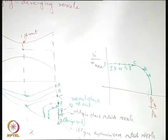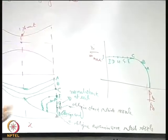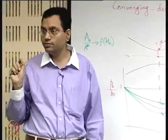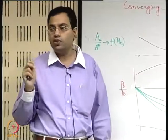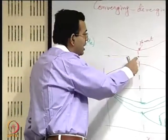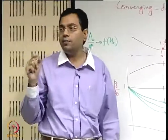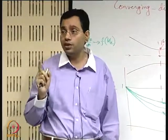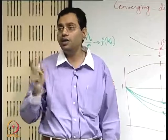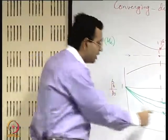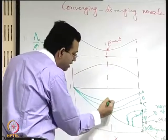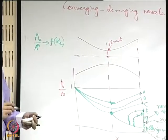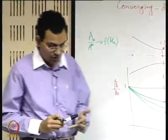If you want supersonic flow in the diverging section, the flow must pass through the sonic point at the throat — that is a very important understanding. It is not always necessary to achieve sonic condition at the throat; in the previous class we worked out an example where at the throat the Mach number was less than 1. But if it has to be 1, it has to be at the throat. With this understanding, let us work out a couple of problems on the converging-diverging nozzle.